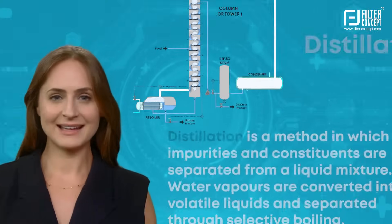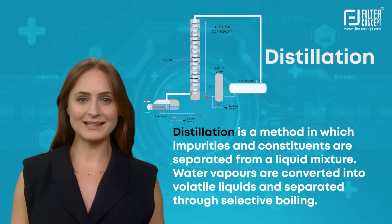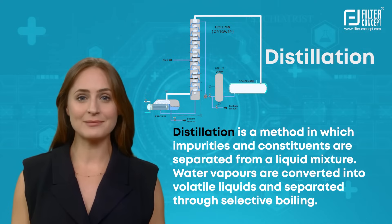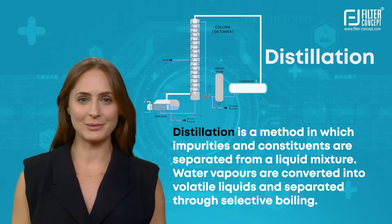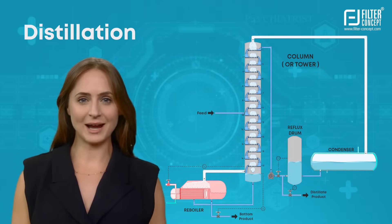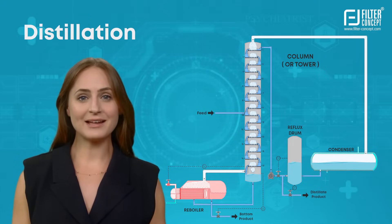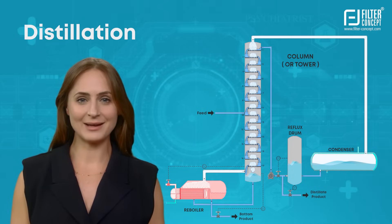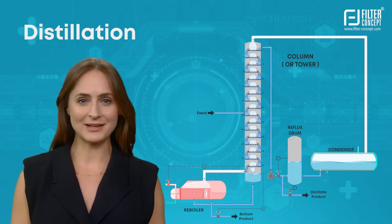Distillation is a method in which impurities and constituents are separated from a liquid mixture. Water vapors are converted into volatile liquids and separated through selective boiling. This method is carried out between liquids having different boiling points and operated in batch or continuous modes and in single or multiple steps. It can effectively remove impurities and achieve high purity.